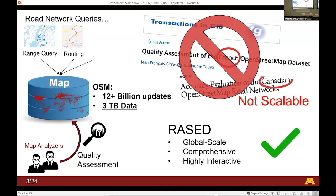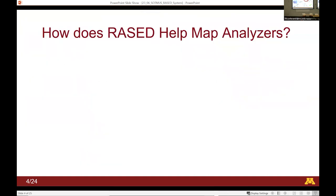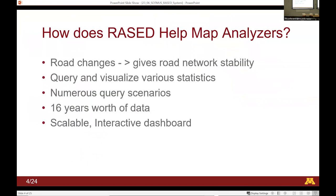So here comes RASID. It aims to provide a global-scale, comprehensive, and highly interactive analysis for the data in OSM, so that researchers can use it. What kind of analysis does RASID help map analysts perform?